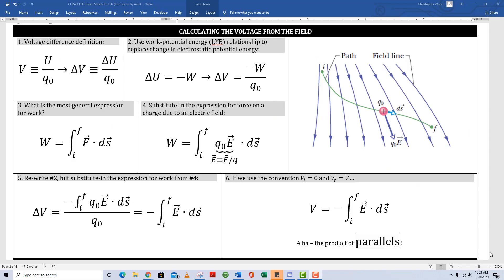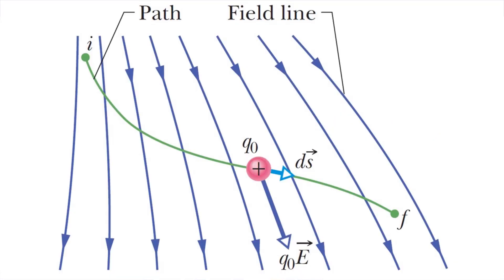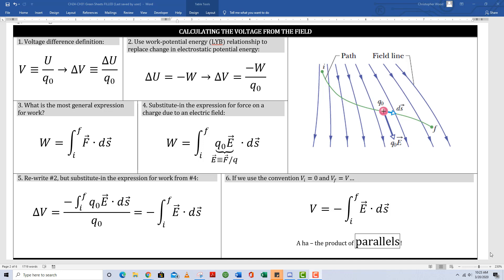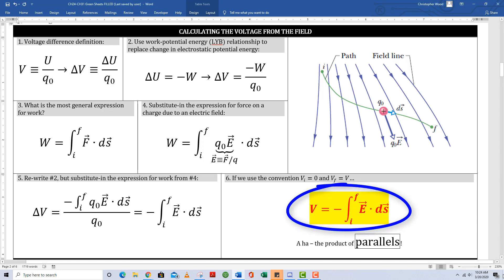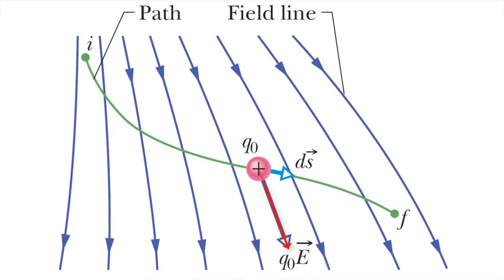Next section: calculating the voltage from the field. We're basically going to reverse engineer what's going on with the electric field lines and from that derive voltage differences. Probert travels from point I to point F along some random path through an electric field. Notice our two vectors: one is a differential displacement vector and the other is the electric field vector. We can derive voltage from the integral of E dot ds. This is the dot product — the product of parallels. We only care about the component of the electric field that lies parallel with the differential displacement vector.